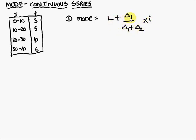We'll discuss what L, Δ₁, Δ₂, and I are. Looking at the frequencies, the highest frequency is 10. Mark this highest frequency with a box around this row.